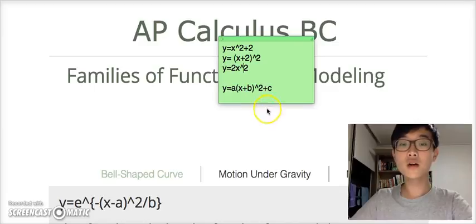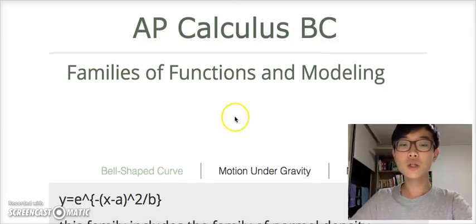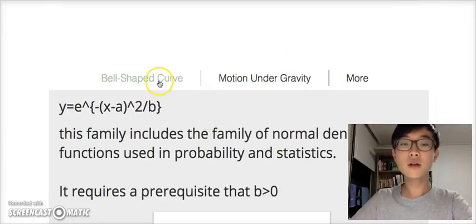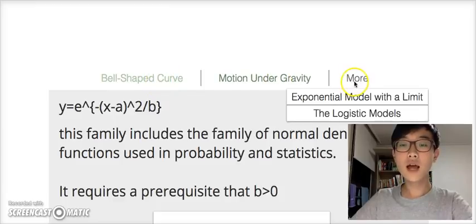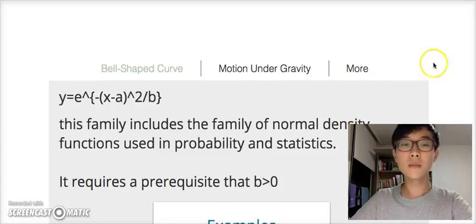Today, we'll take a look at four major families of functions: the bell-shaped curve, motion under gravity, exponential model with a limit, and logistic models. First of all, let's take a look at the bell-shaped curve.